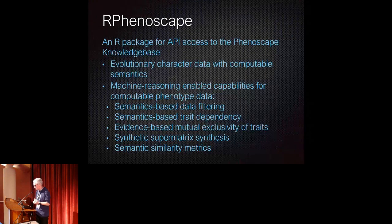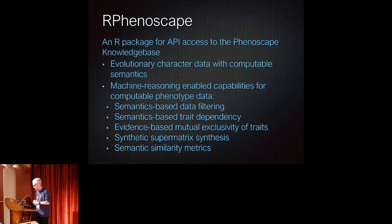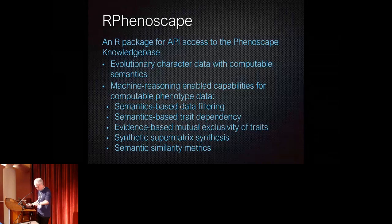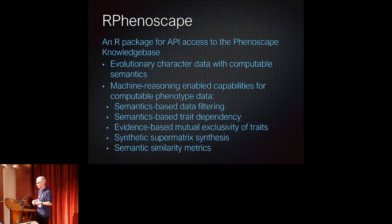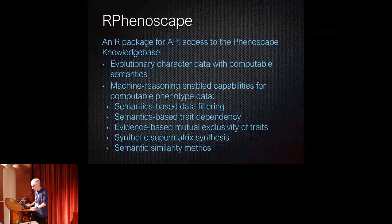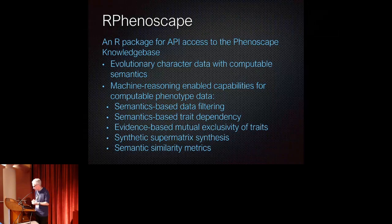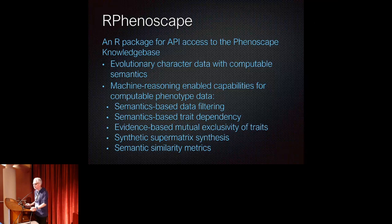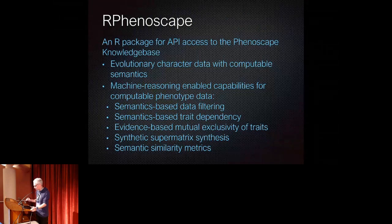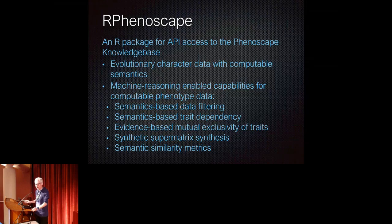So that's called RPhenoscape. RPhenoscape is an R package for API access to the Phenoscape knowledge base, and particularly provides convenient access to the following things. Number one, convenient access to the evolutionary character data with computable semantics, i.e. all the ontology links, and it also provides access to the machine reasoning capabilities that the Phenoscape KB either provides itself or actually enables to the data that it has. Specifically, these are semantics-based data filtering, trait dependency, evidence-based mutual exclusivity of traits, synthetic supermatrix synthesis, and semantic similarity matrix. I won't really take you through much code that is about the first. That's existed for a longer time. This is not really very new, and so I'll focus on the remaining four.